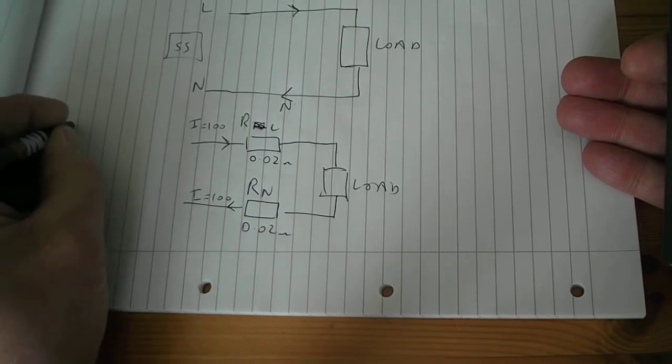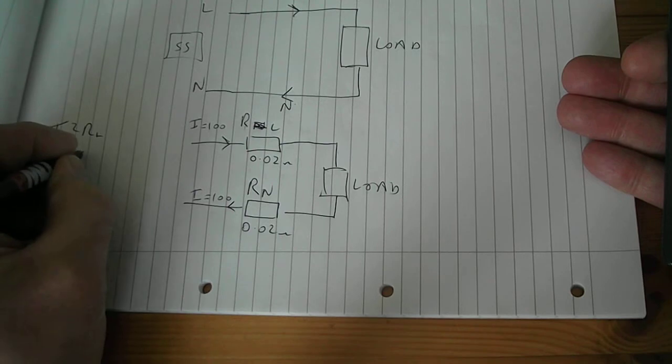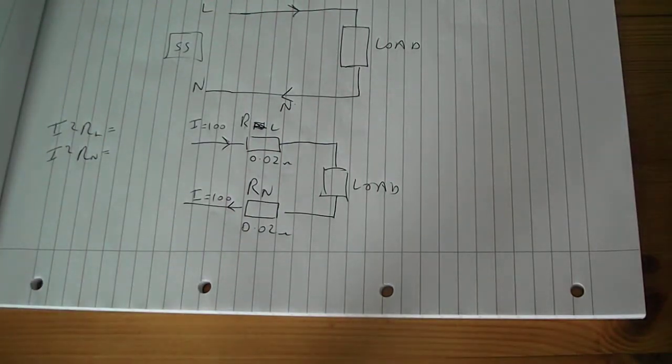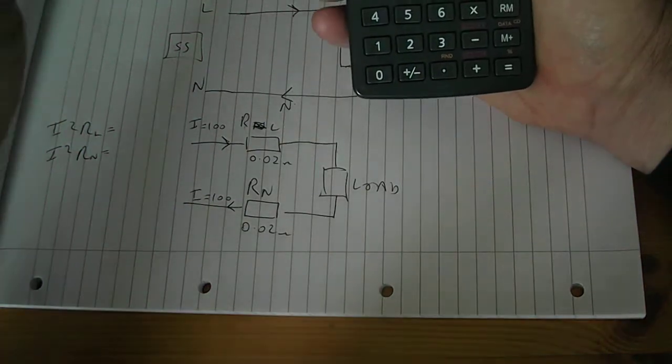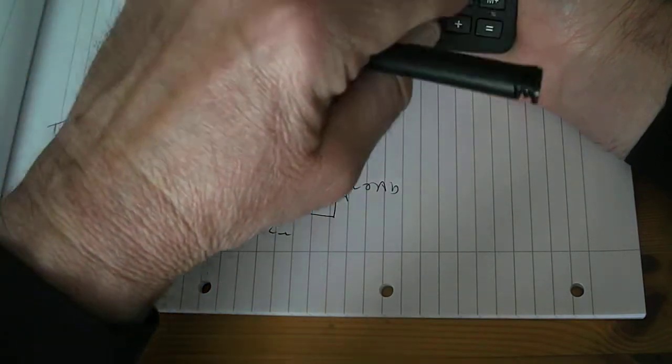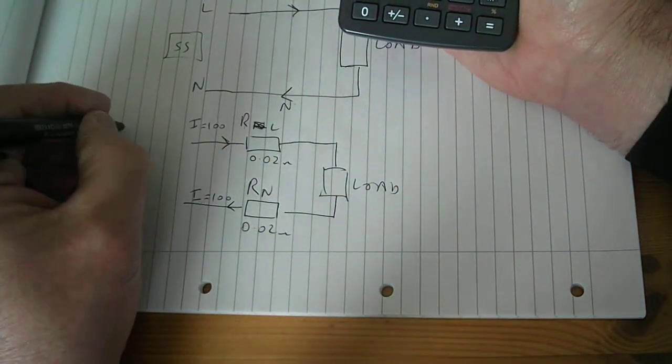So I squared RL, I squared R neutral. I've got 100 squared is 10,000 times 0.02 equals 200 watts.